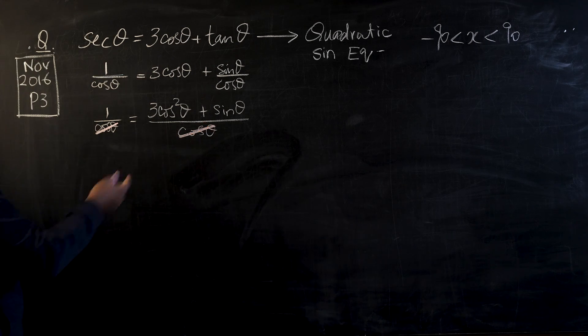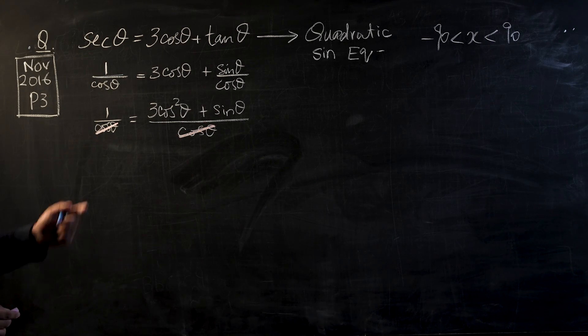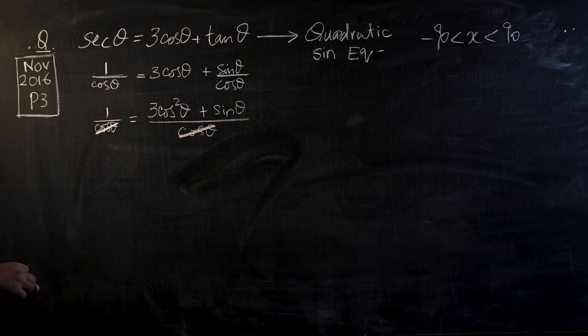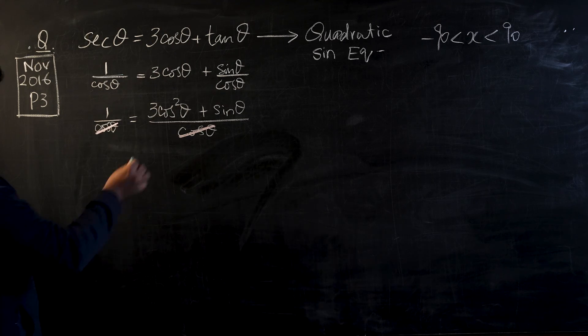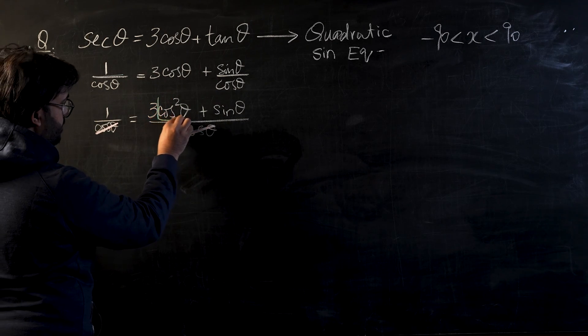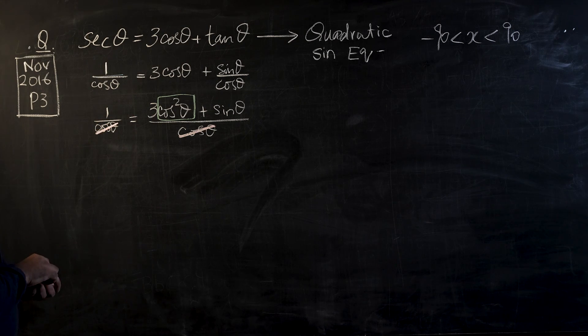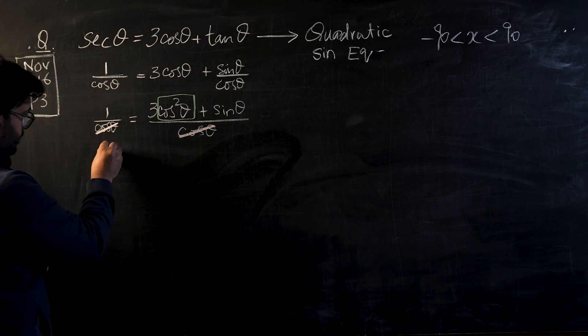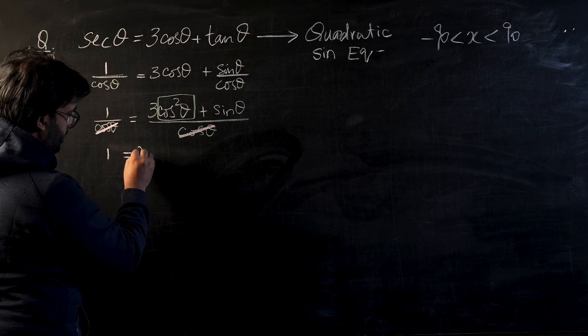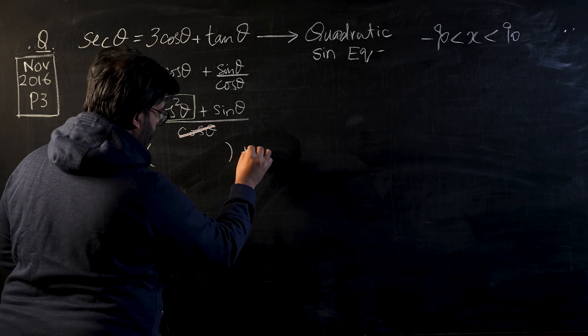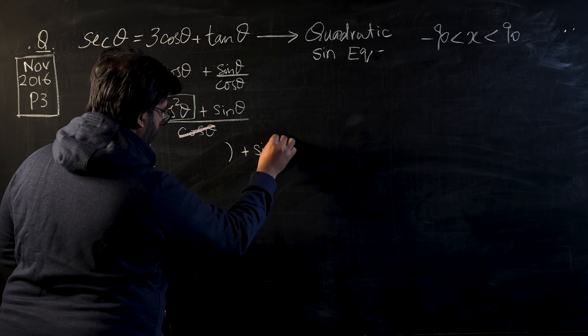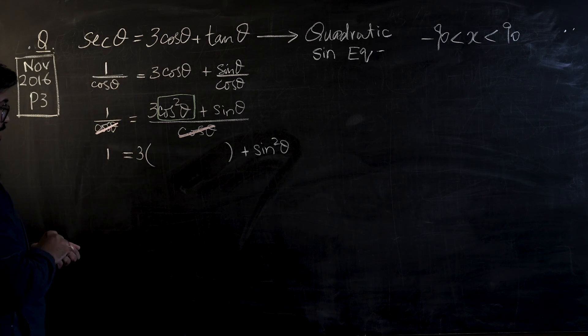So this is our first step that we have done. Now we can see that these two denominators can get simplified because they're same on both sides. Now we can get rid of cos² θ by going into the identity. So this cos² θ can be substituted as 1 minus sin² θ.